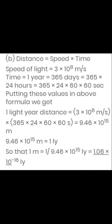Now the question is: one meter is equal to how many light years? So do the inverse: one meter = 1/(9.46 × 10¹⁵) light years = 1.06 × 10⁻¹⁶ light years. You can convert anything by inverting the relation. Just as 1 km = 1000 m means 1 m = 1/1000 km, similarly if 1 light year = 9.46 × 10¹⁵ m, then 1 meter = 1/(9.46 × 10¹⁵) light years.